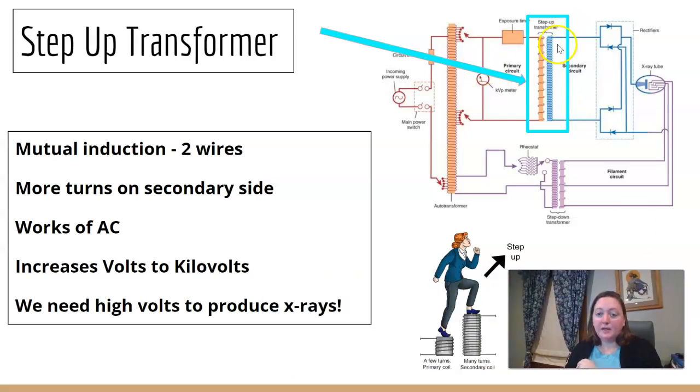The first one that we hit up here on the top is the step up transformer. And I want you to think it's right after the KVP meter. It's going to turn my volts into kilovolts. The step up transformer works off of mutual induction because there's two wires. So the step up and step down have friends. There's two of them. They have a primary and a secondary side. The step up means there's more windings of the coil on the second side than on the first side. It's increasing. So we're going to bump our volts to kilovolts up here.